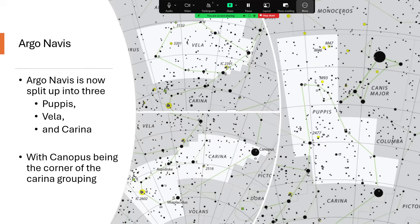And nowadays, Argo Navis is no more. It's been split up into three separate constellations, Puppis, Vela, and Carina, and Canopus ends up just in that corner of Carina.